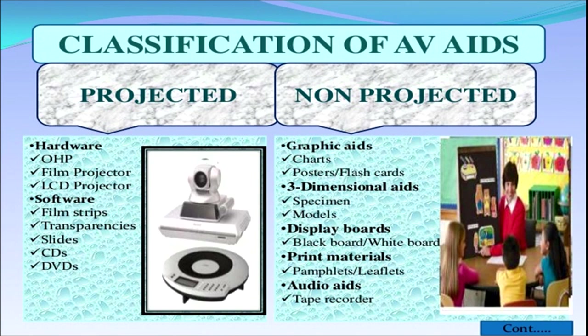Classification of audio-visual aids: they are divided into projected aids and non-projected aids. Under projected aids, hardware includes overhead projector, film projector, and LCD projector; software includes film strips, transparencies, slides, CDs and DVDs. Under graphic aids: charts, posters, flashcards. Under three-dimensional aids: specimens and models. Under display boards: blackboard and whiteboard. Under print materials: pamphlets and leaflets. Under audio aids: tape recorders.